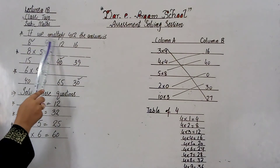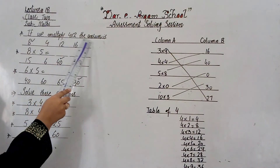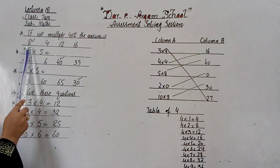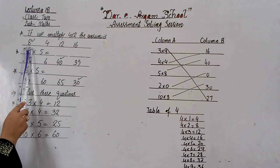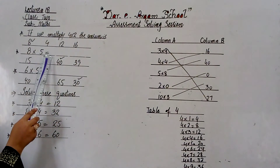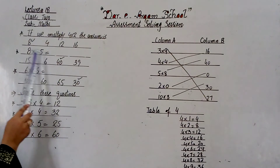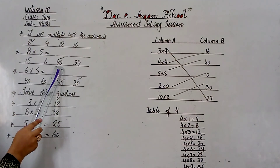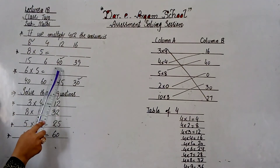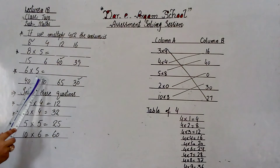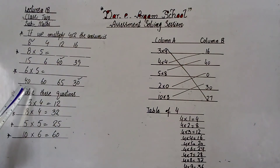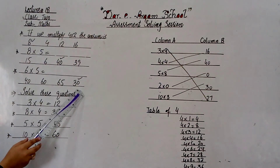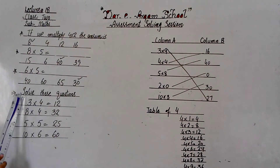If we multiply 4 by 2, the answer is 8 — 4 twos are 8. The right answer is 8. 8 multiplied by 5 is equal to 40 — 8 fives are 40, 5 eights are 40. The right answer is 40. 6 fives are 30, 5 sixes are 30. 30 is the right answer.